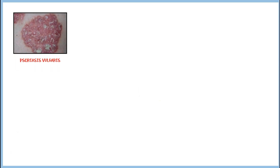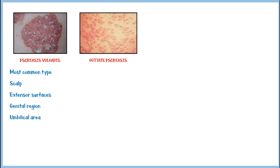There are several different types of psoriasis according to their morphologic features. Psoriasis vulgaris is the most common type, involving the scalp, extensor surfaces, genital region, and umbilical area. Guttate psoriasis is seen predominantly on the trunk, is sudden in onset, and typically appears 2-3 weeks after an upper respiratory tract infection.